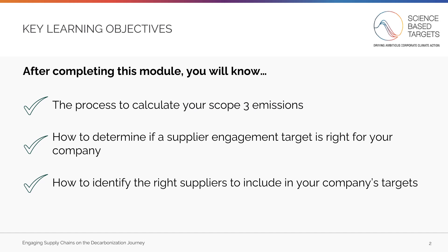After completing this module, you will know: first, the process to calculate your Scope 3 emissions; second, how to determine if a supplier engagement target is right for your company; and lastly, how to identify the right suppliers to include in your company's targets.